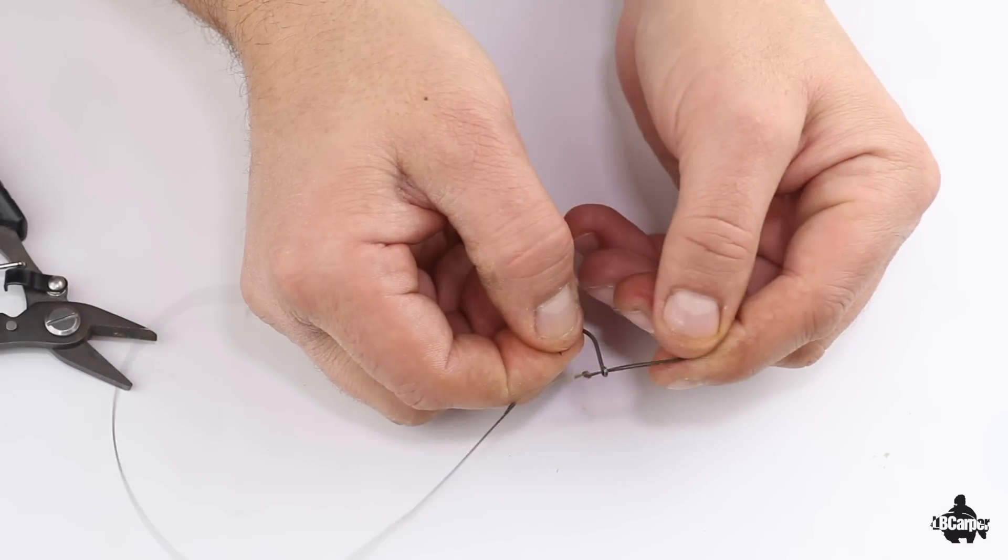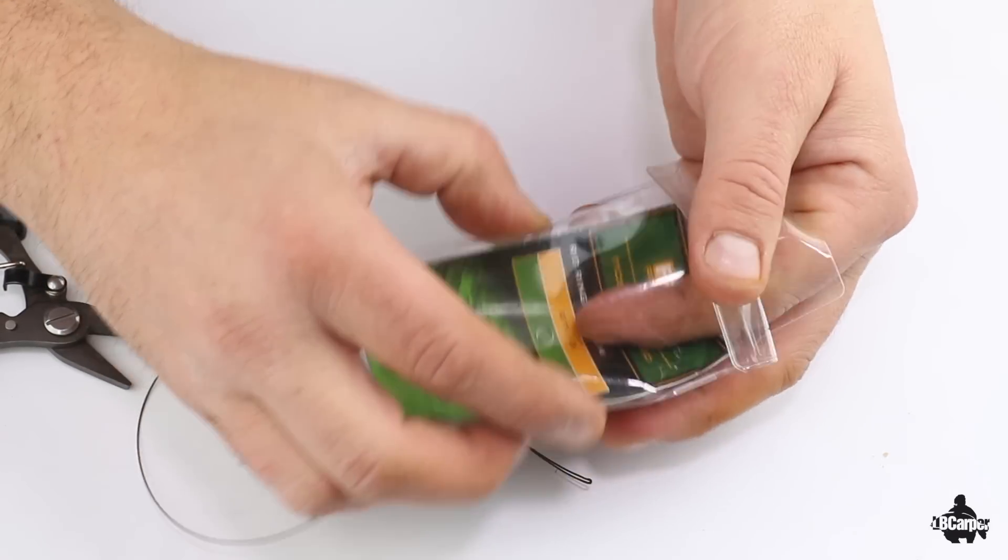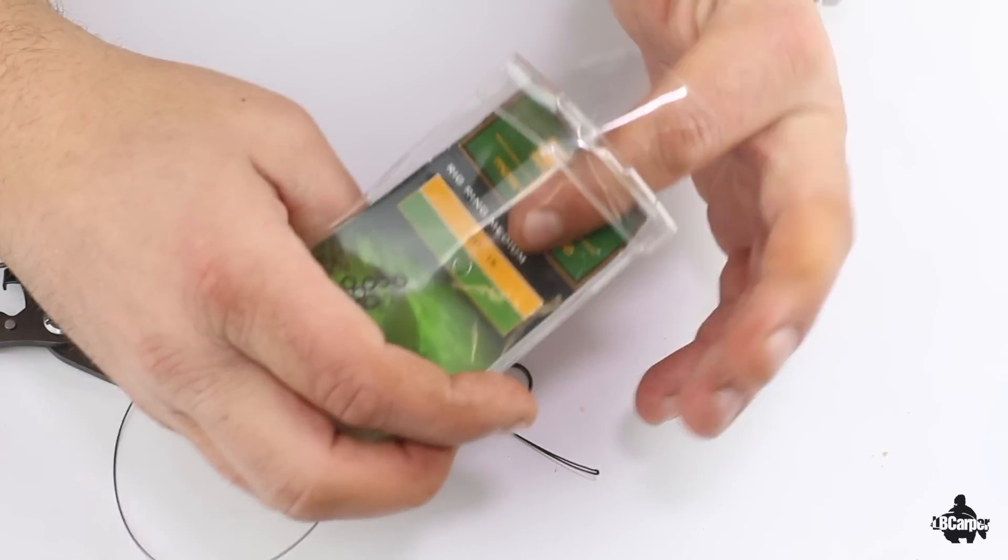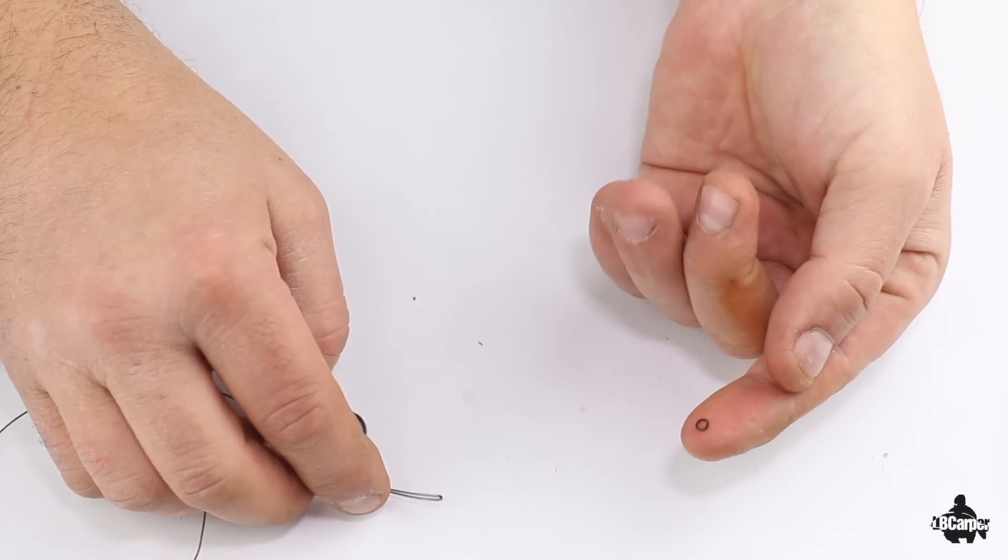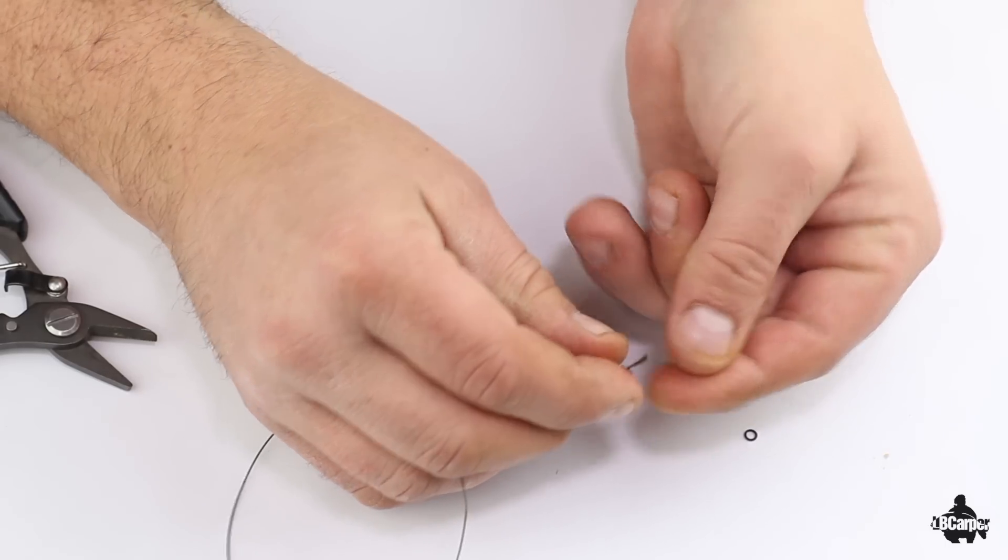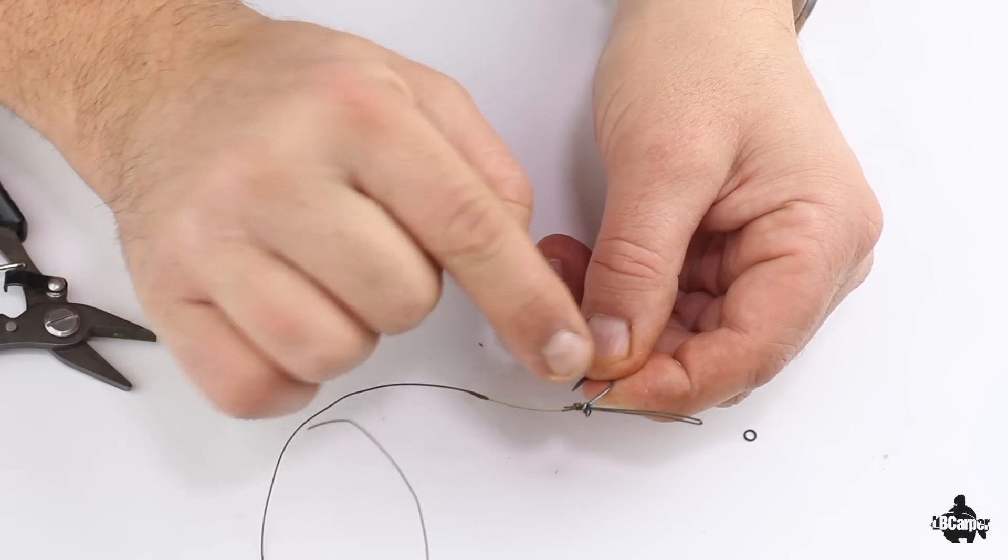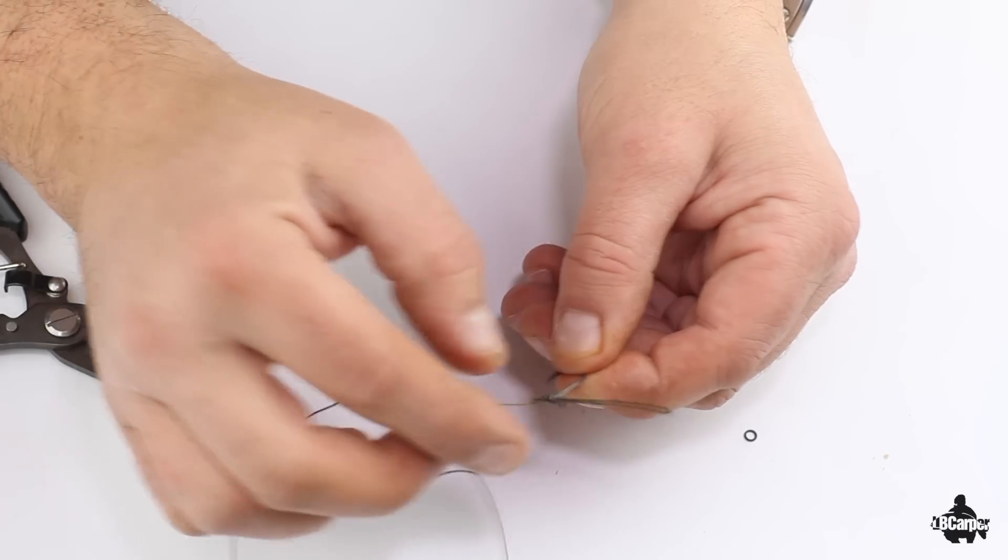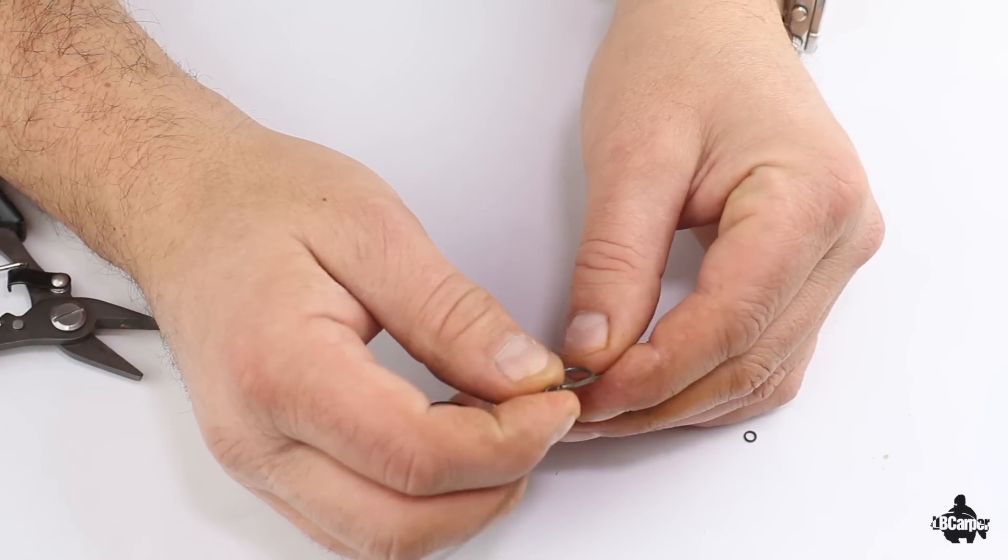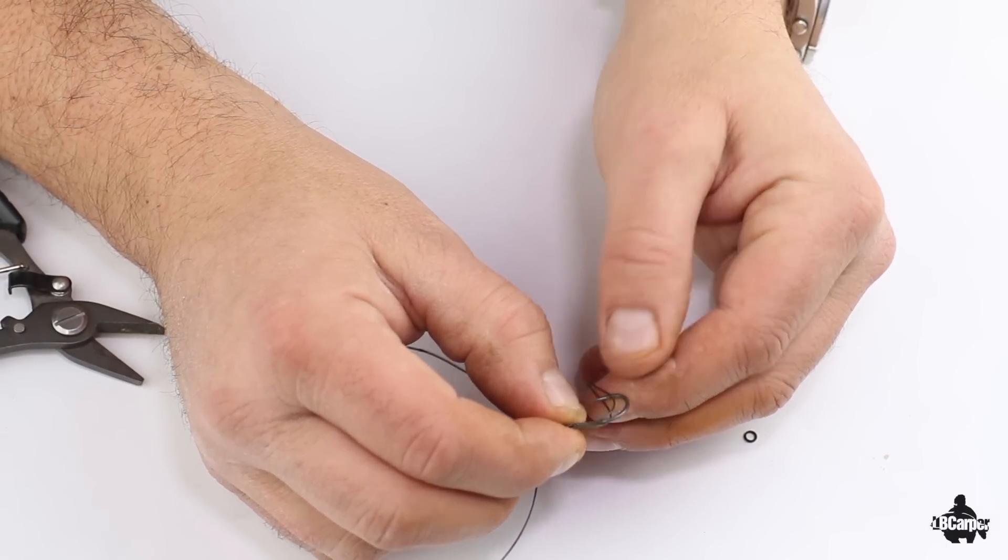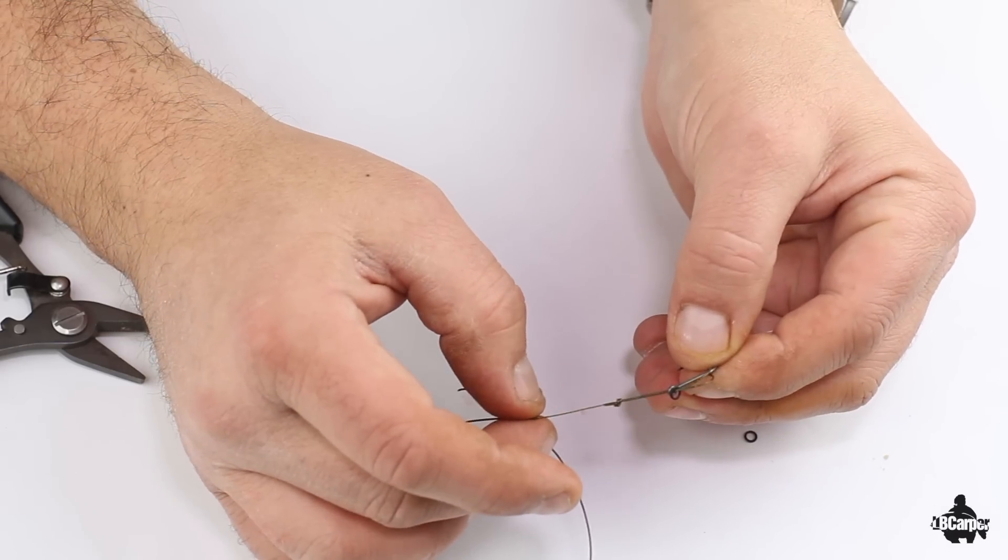Really tight like so. Next thing you want is a large rig ring. Thread that on as well. You've got chod hook, large rig ring, and your loop. You push the hook through the loop. This creates your D. Pull it down slightly.